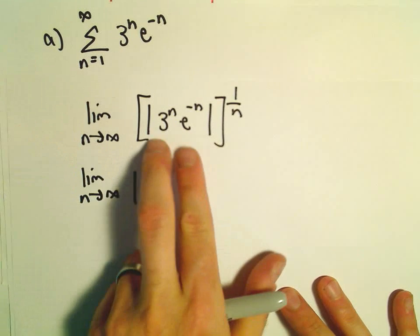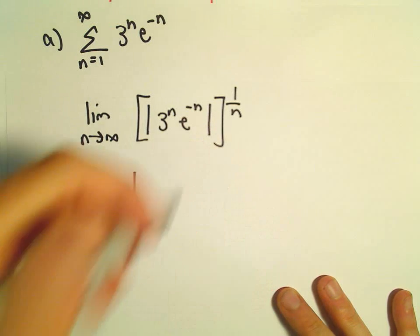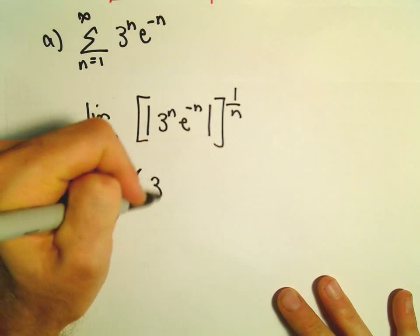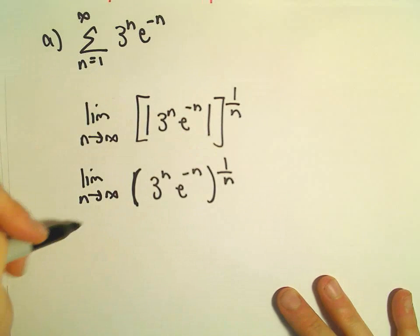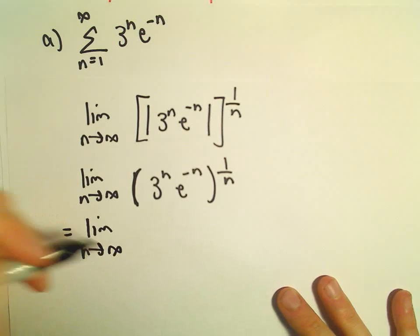Well, both of these are going to be positive no matter what value of n we plug in. So we can simply drop, get rid of the absolute value. Well, then we'll raise it to the 1 over n power.